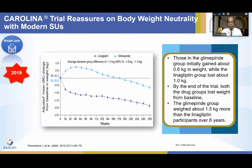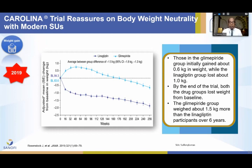The landmark CAROLINA trial further reassures that there is no significant weight change with modern sulfonylureas. In that trial, the glimipride group initially gained about 0.6 kg above baseline while the linagliptin group lost 1 kg, but by the end of the trial both groups had lost weight from baseline. The glimipride group weighed about 1.5 kg more than the linagliptin group over the six years.